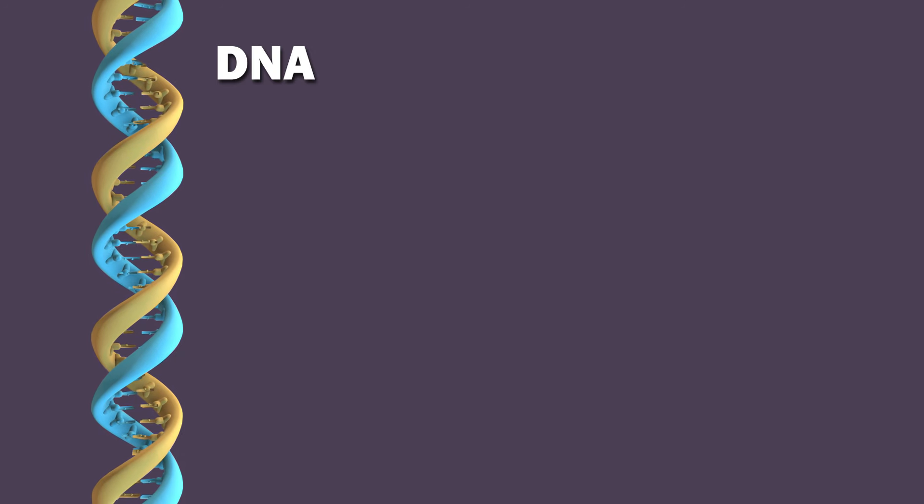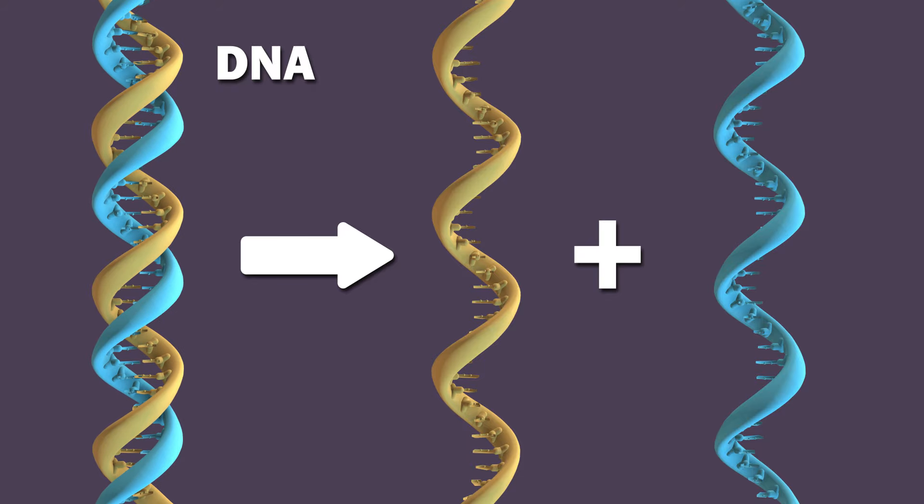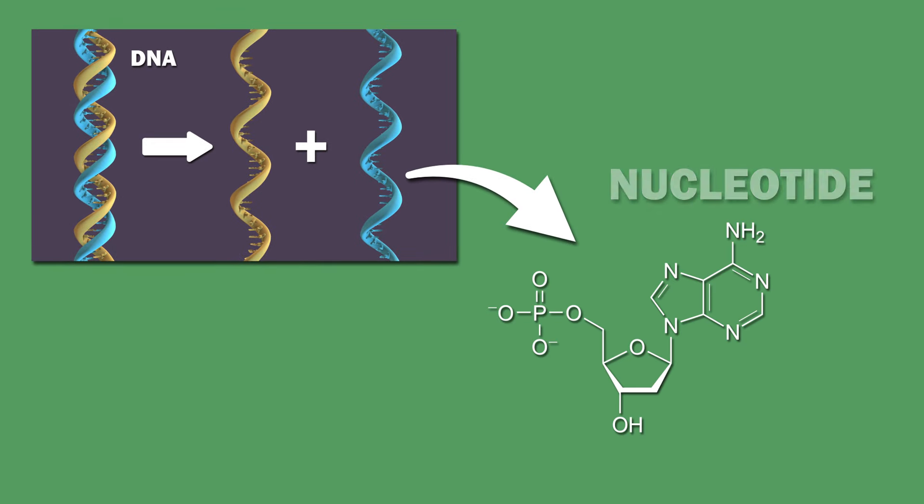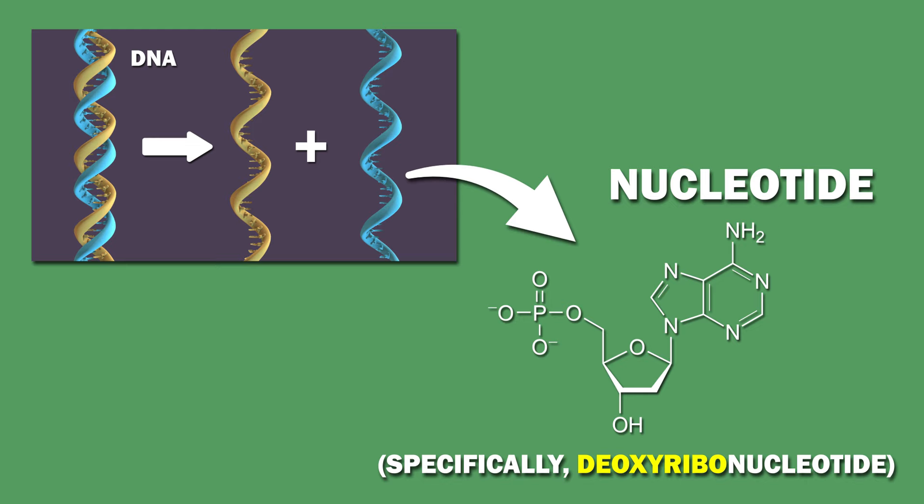DNA is a double helix, which means that it is made up of two single DNA strands. Each DNA strand is in turn composed of many monomers called nucleotides, specifically deoxyribonucleotides. As a result, each strand is a polynucleotide.